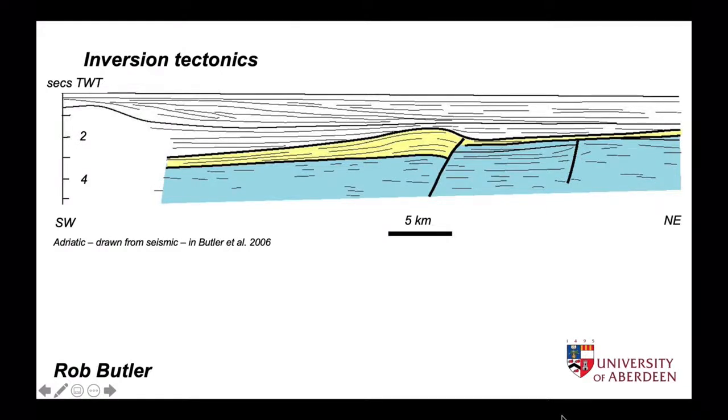Once a fault has developed in the continental crust, you might expect this flaw to focus deformation, even if this happens long after it first formed and the crust finds itself in a different tectonic regime. If normal faults formed during rifting reactivate later under contraction, it's called inversion tectonics.